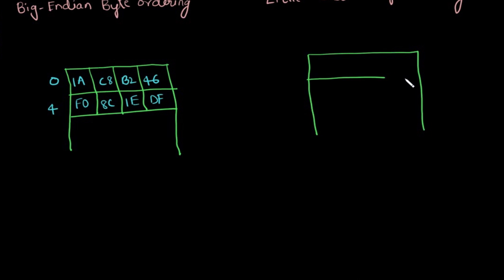Same, the word size is also same which is 4 bytes, 1, 2, 3 and 4. The data is also same. 1A, C8, B2, 4, 6, F0, 8C, 1E, DF. And the word address is 0, second word address is 4. Now, let us calculate the value of each word. So, what is the value of this word?